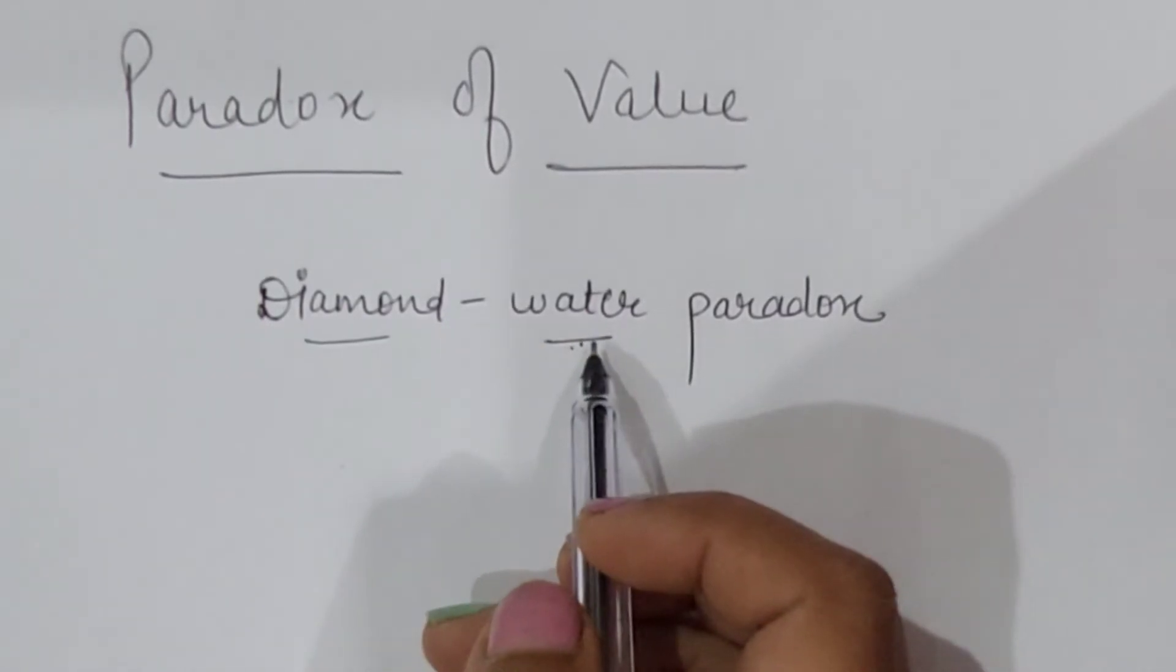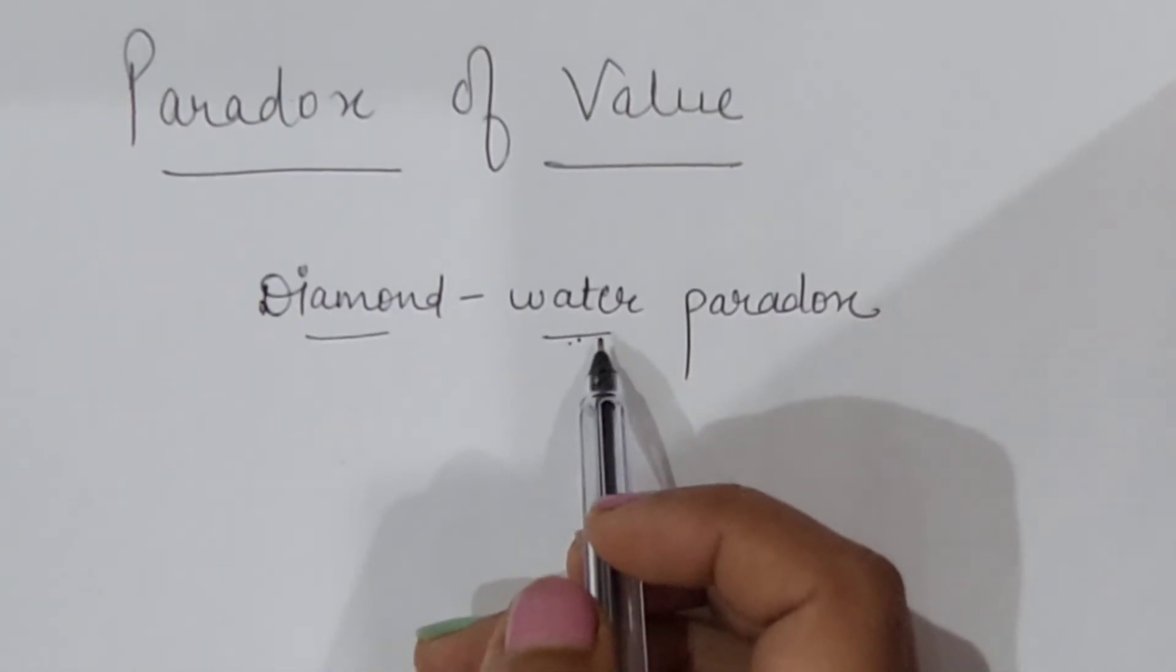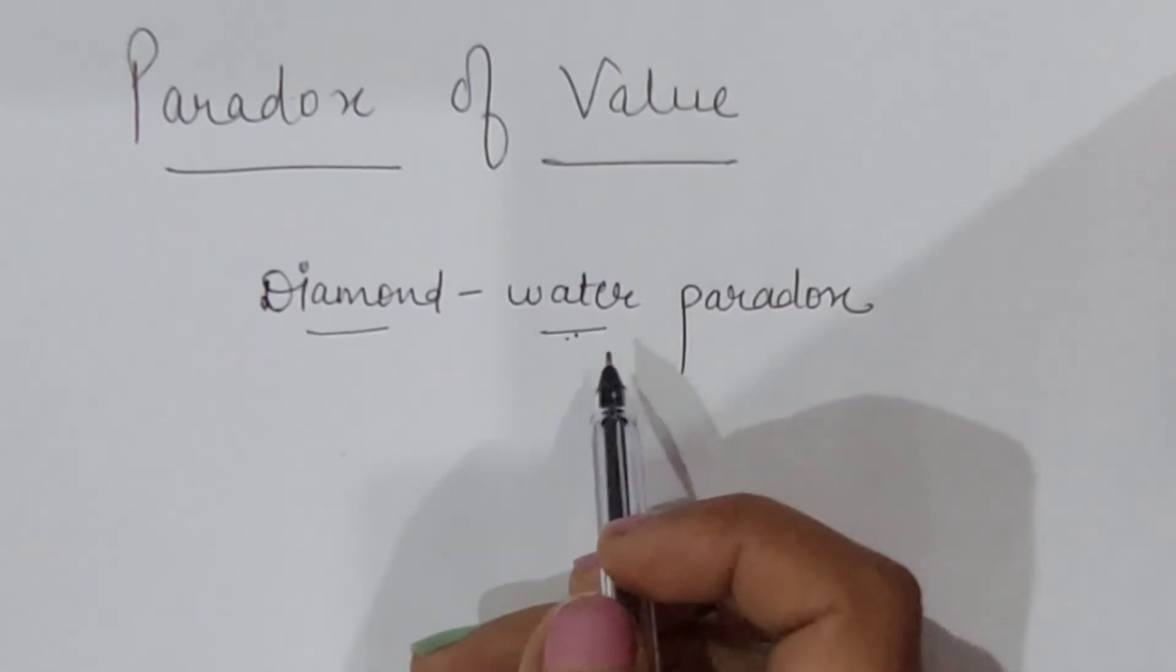Water is available in abundance, so its total utility soon reaches the point of saturation. In other words, marginal utility soon becomes almost zero.